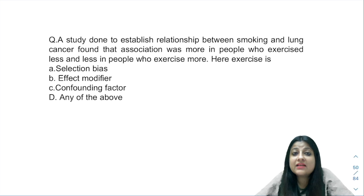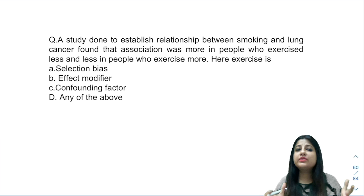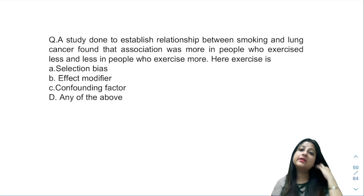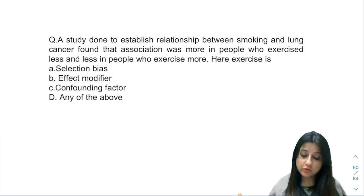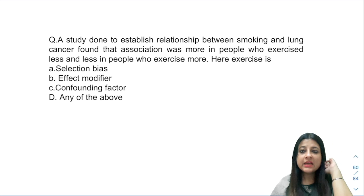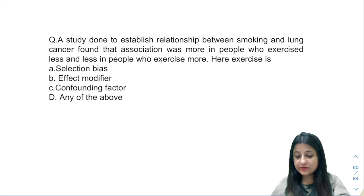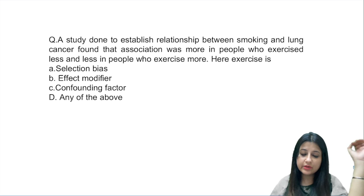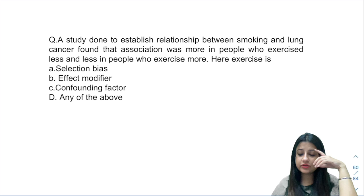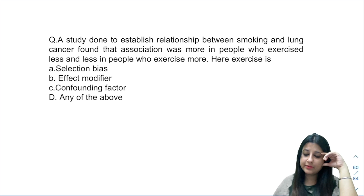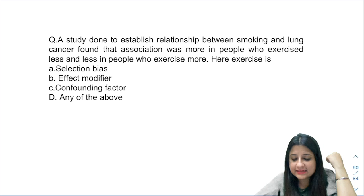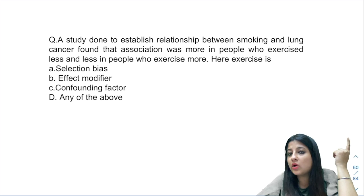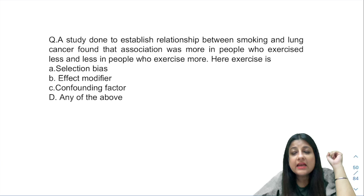Welcome back to another PYQ which is very confusing for some students — figuring out where they should mark confounding factors and where they should mark effect modifier. Look at the question: a study established to find the relationship between smoking and lung cancer found that the association was more in people who exercised less and less in people who exercised more. So what is exercise here?